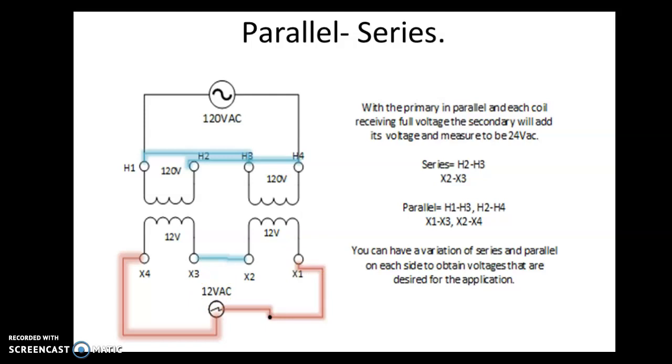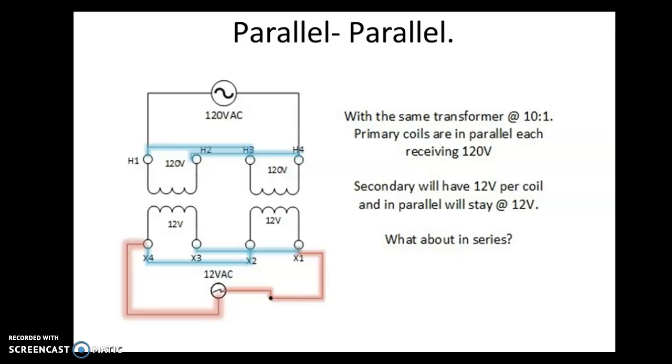Some of the things to denote for this is that a series connection is typically H2 to H3, X2 to X3. Parallel connection is 1 to 3, 2 to 4, 1 to 3, 2 to 4. We can see that again here.